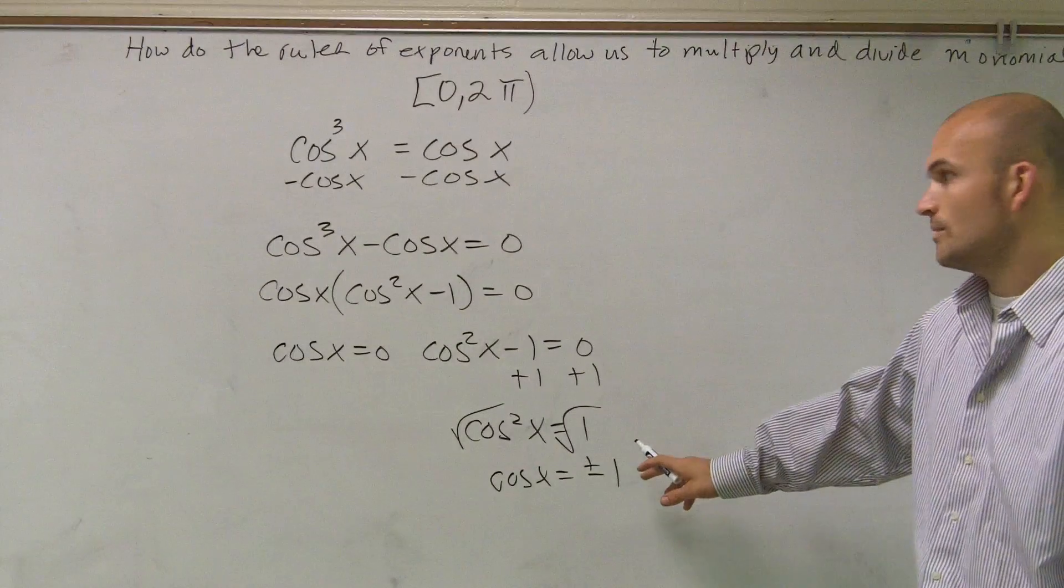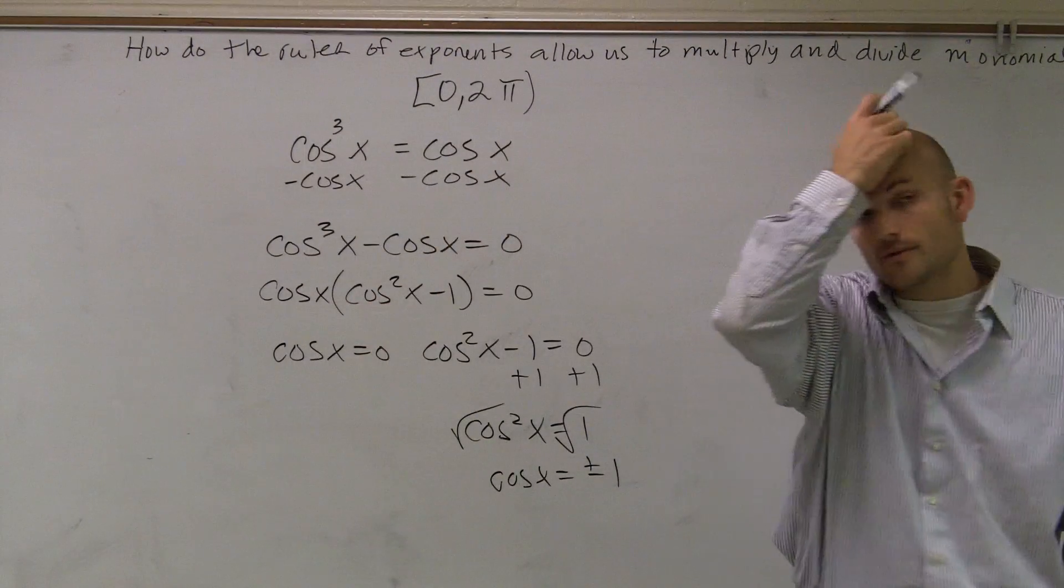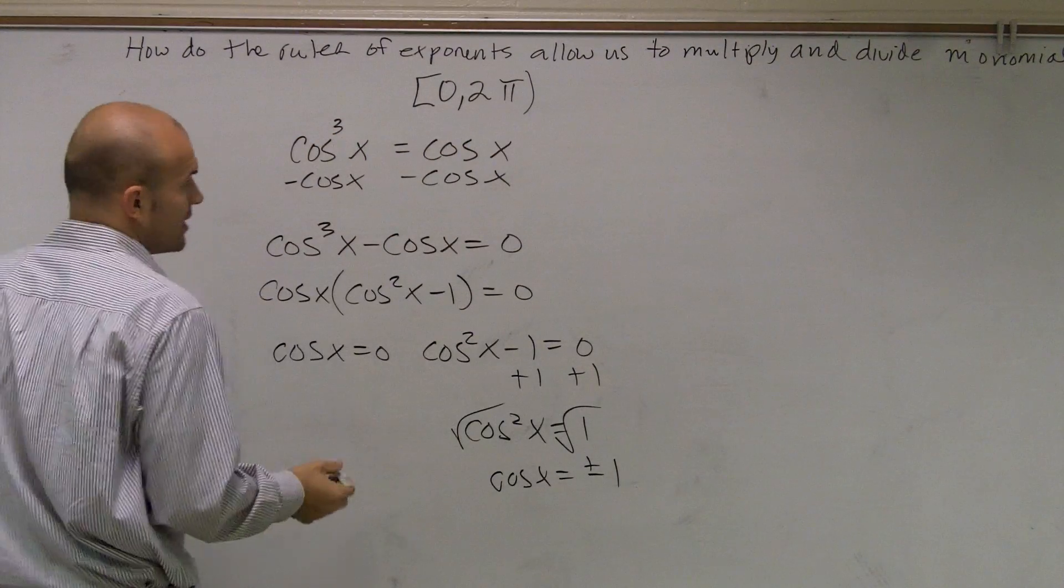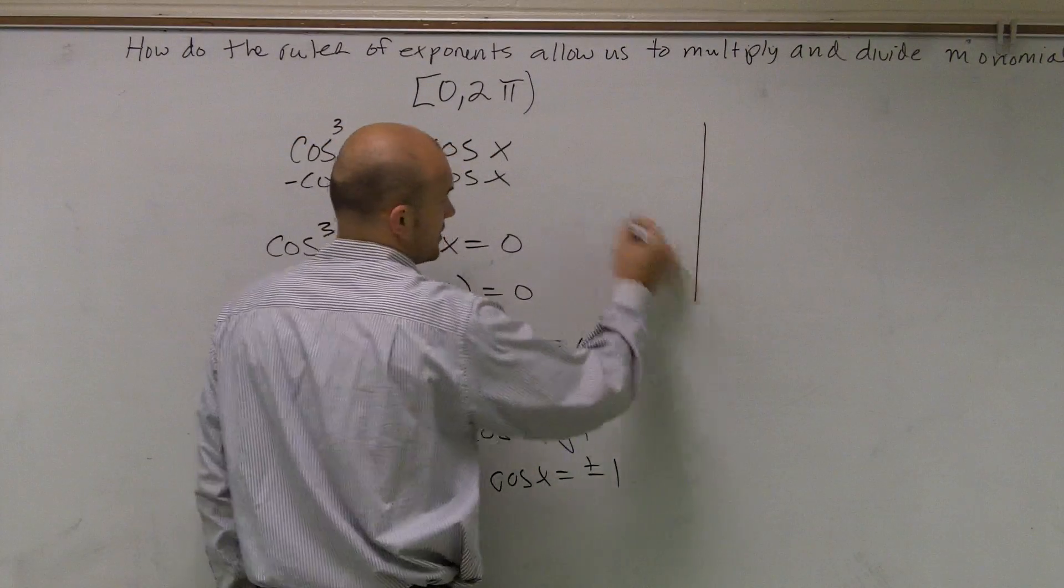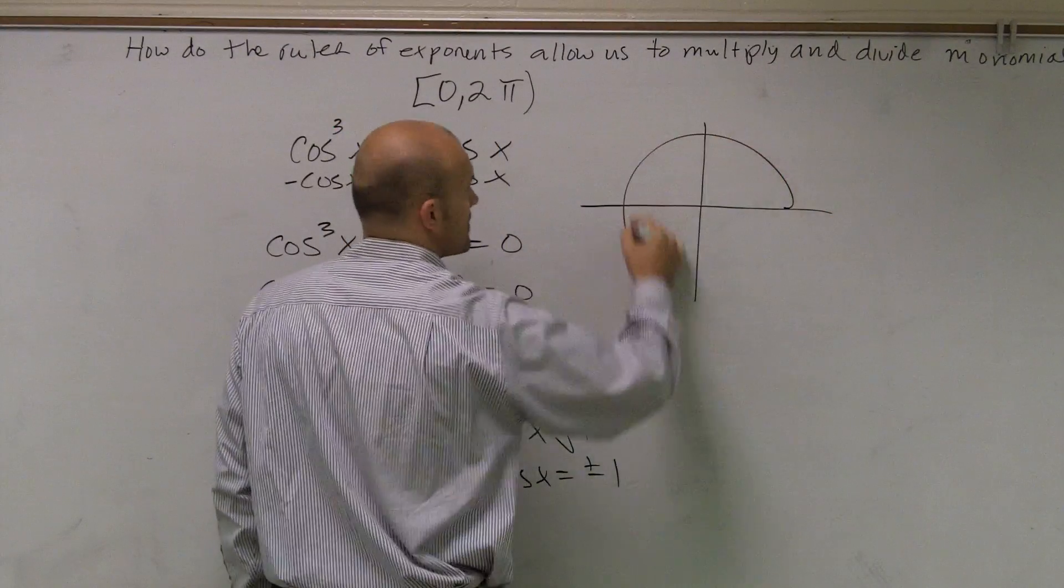And also equals 0 over here. So now what we're going to do is find our solutions. So let's go and take a look at our circle again. And let's just take a look at when do our values for cosine.